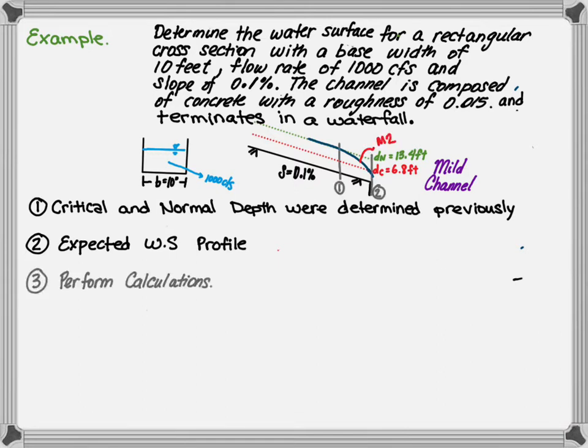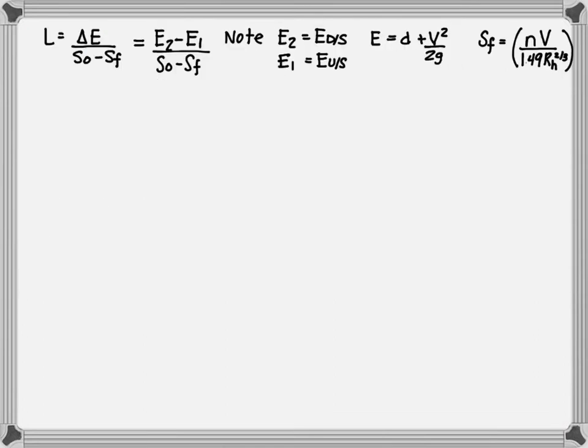Next, we're ready to perform the calculations. The equations that we're going to use to find the calculations is our length is equal to the change in energy over the bed slope minus the friction slope, where E2 minus E1 is the change in energy.